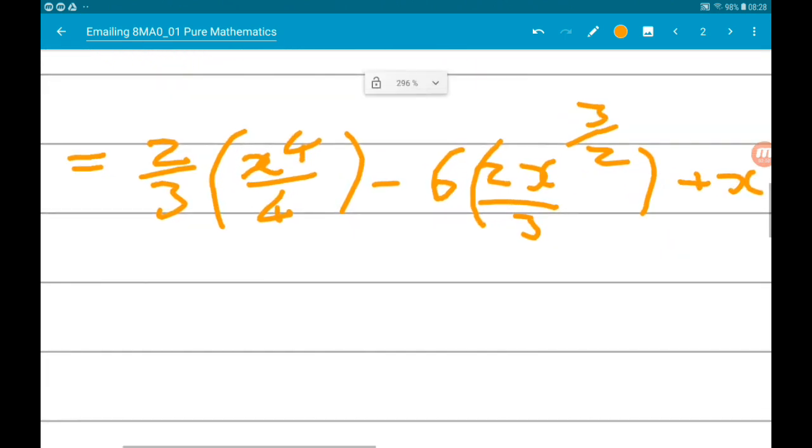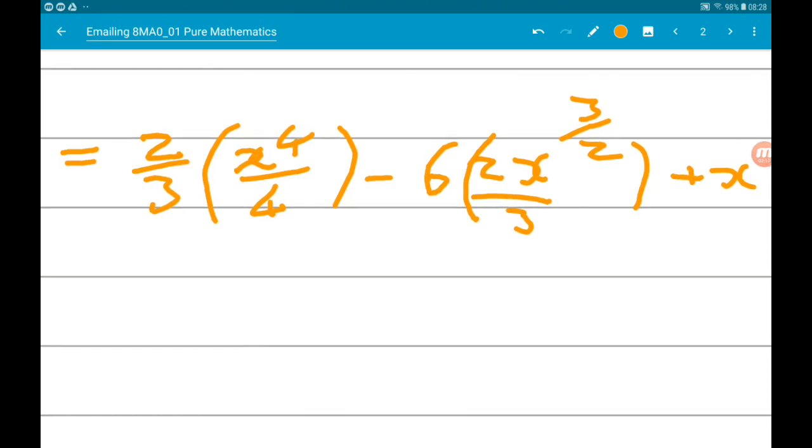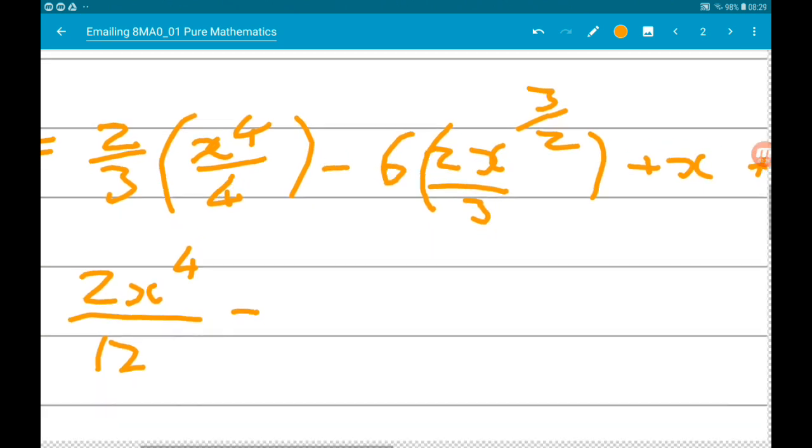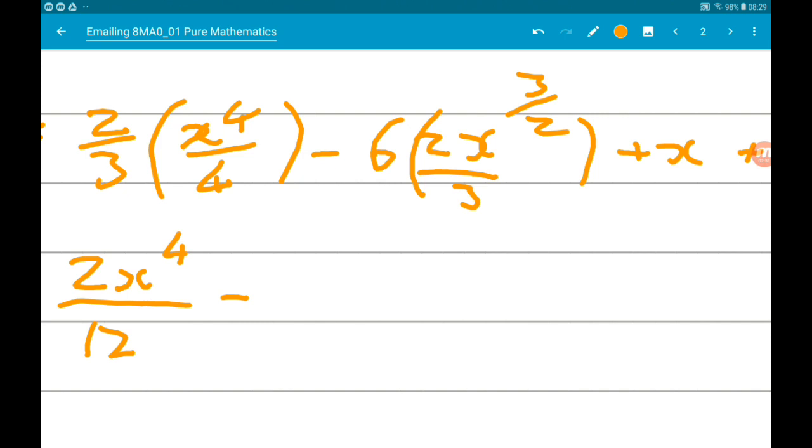Okay, so 2 thirds times 1 quarter is going to give us 2x to the power of 4 over 12 minus, now 6 times 2 thirds x to the 3 halves is going to give us 12 over 3 x to the 3 halves, add x, add c.